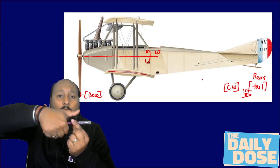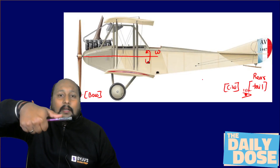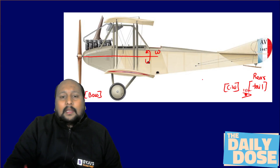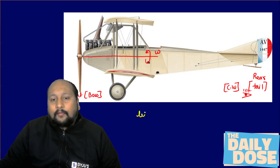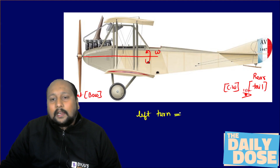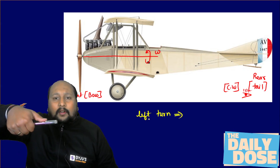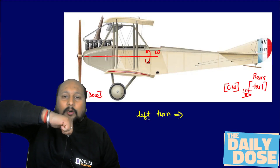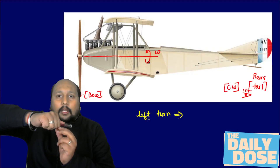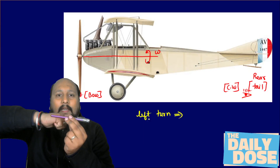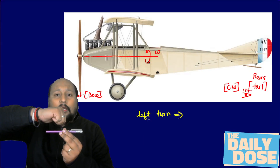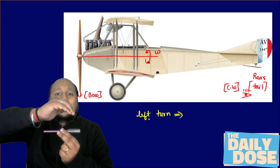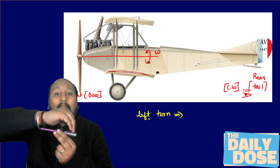The thumb is pointing towards the front side — so this is the direction of omega. Now, let us suppose the aeroplane is taking a left turn. When it takes a left turn, this pen will be pointing towards me. So this thumb will be pointing towards me. If you try to open your fingers, this is the active gyroscopic couple.